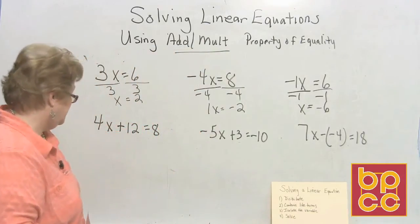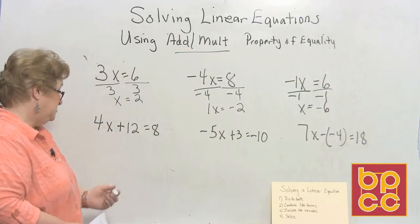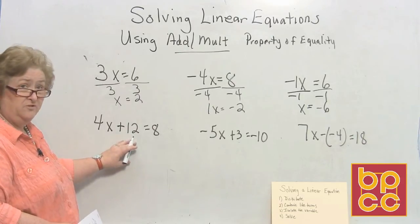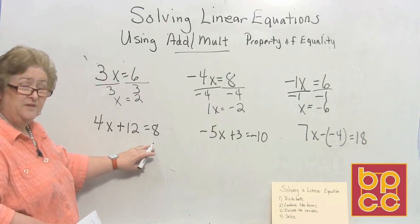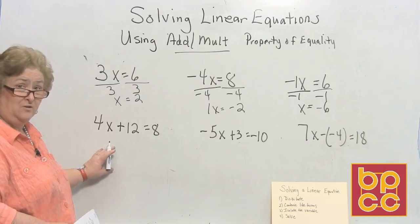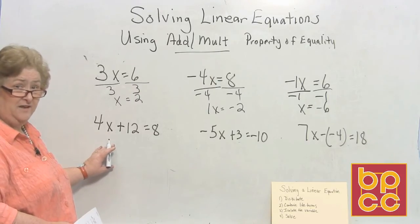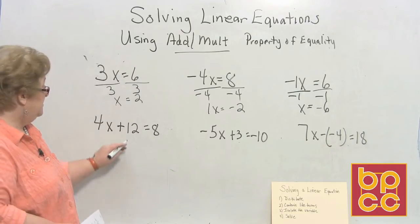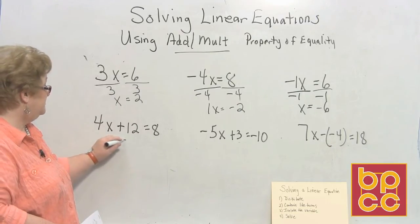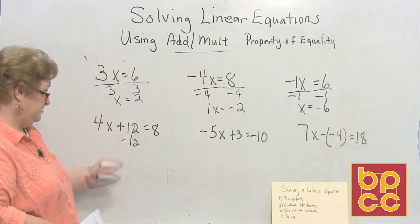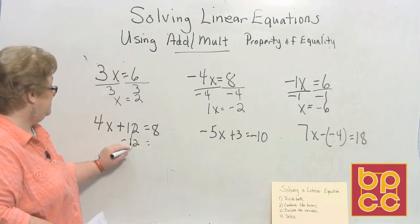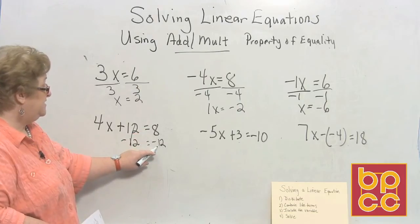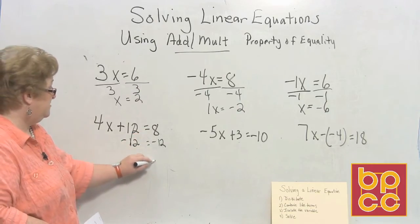On this one, we've got two issues. One, we need to move the 12 to the other side, and then when we get finished, we don't have just one x, so we'll have to deal with that as well. Let's start by moving the 12. The opposite of a positive 12 is a negative 12, and that clears. And when I come over here, that's going to be a negative 12 — and an 8 and a negative 12 make a negative 4.